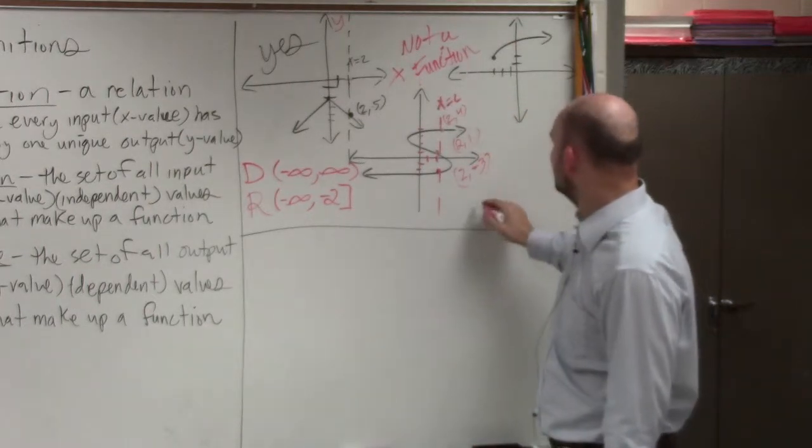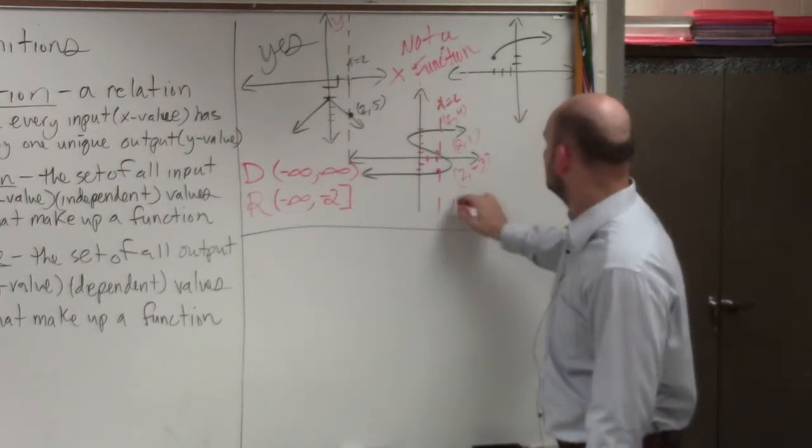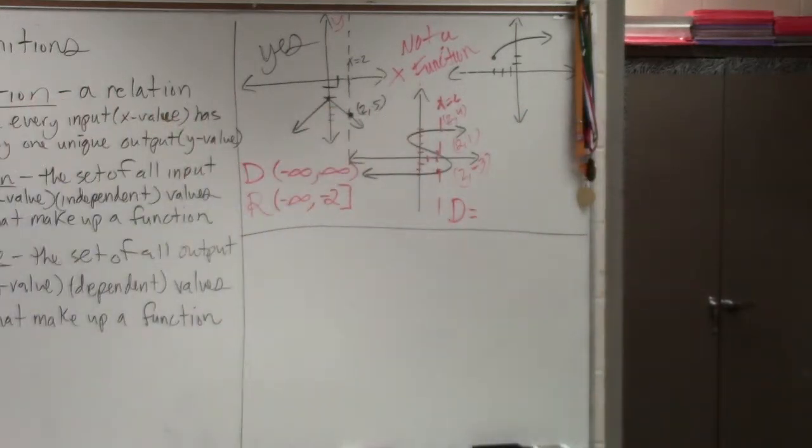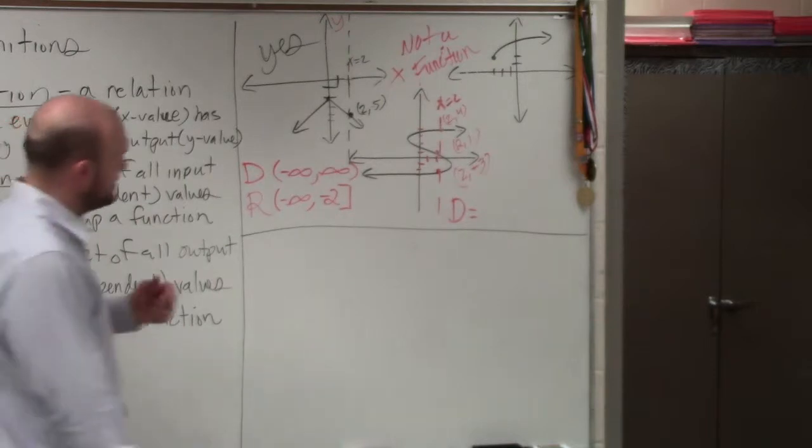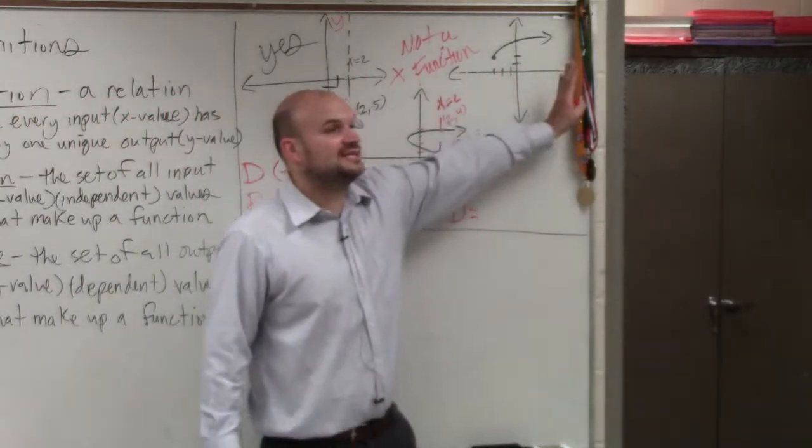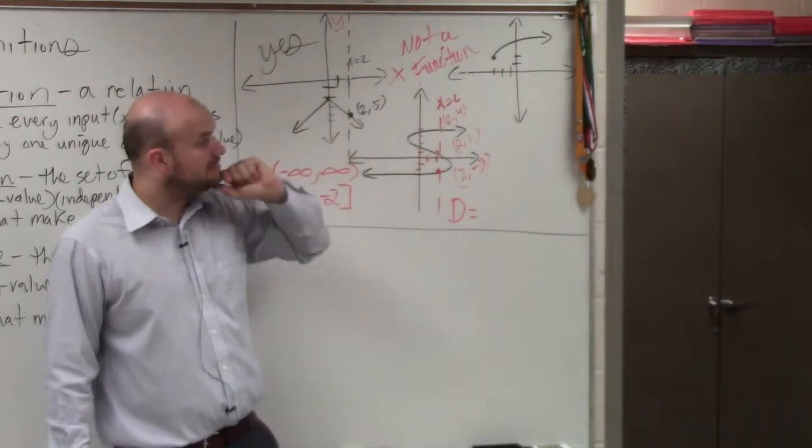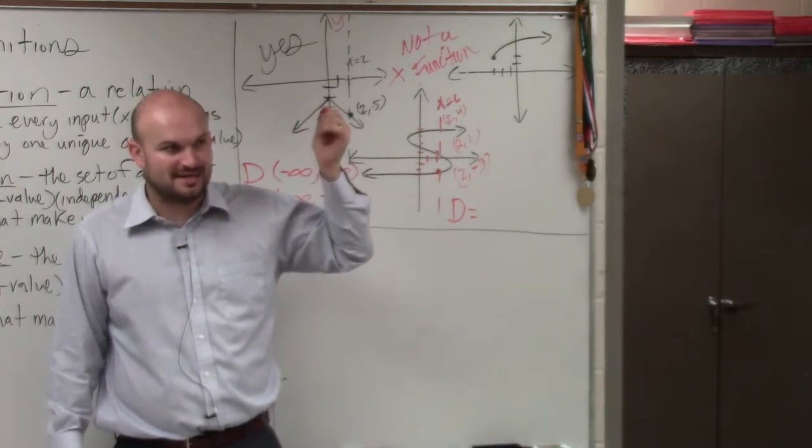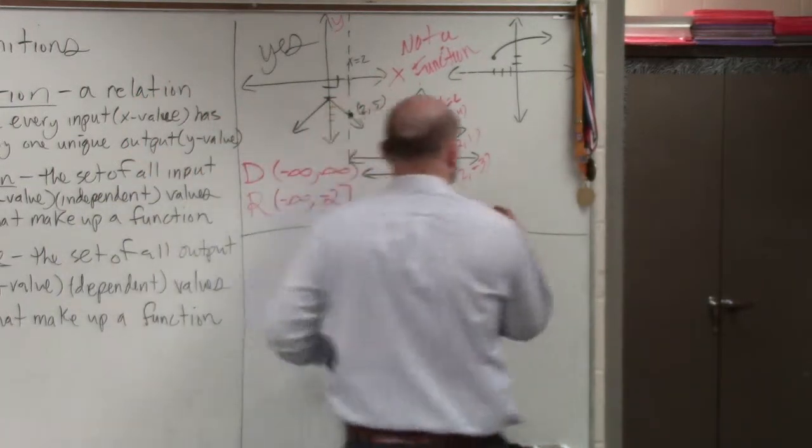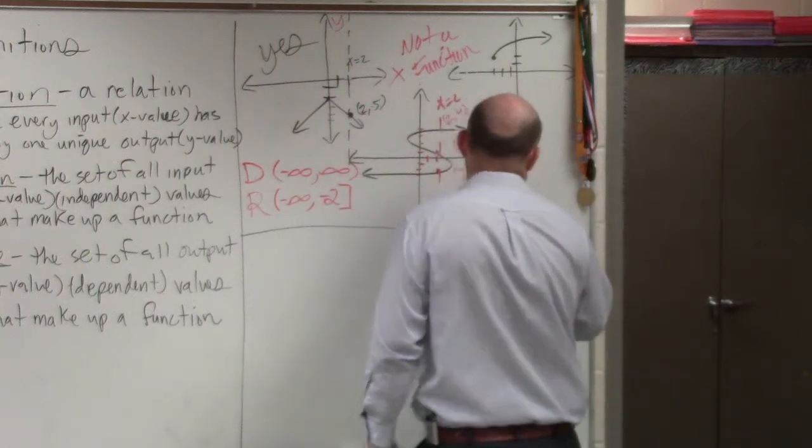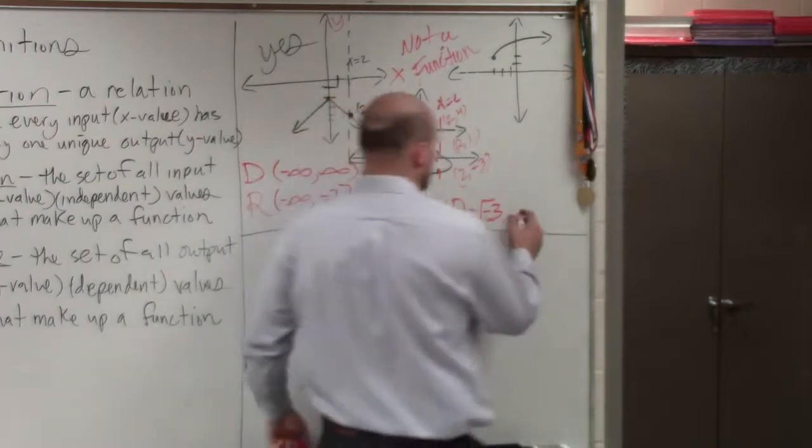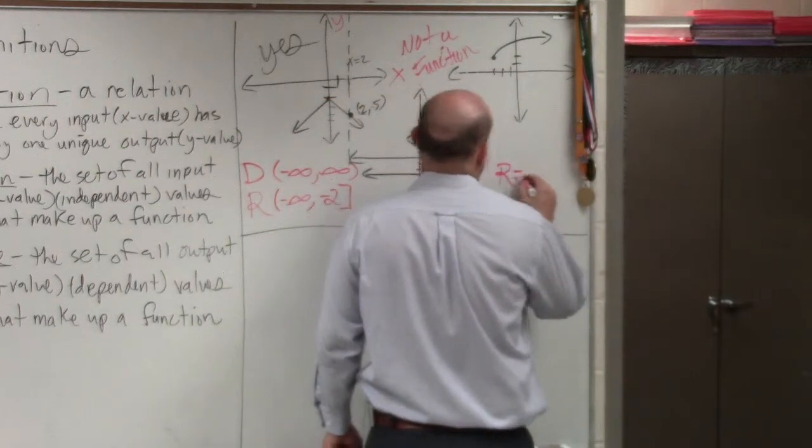All right, last one. Let's try to do this one over here. So the domain, remember, think left, right. Domain, left, right when you're looking at a graph. All right, so how far to the left does this graph go? Negative 3. Is that contained or not contained? Contained. So it's a bracket. And then how far to the right is it going to go? Infinity, which is never contained.